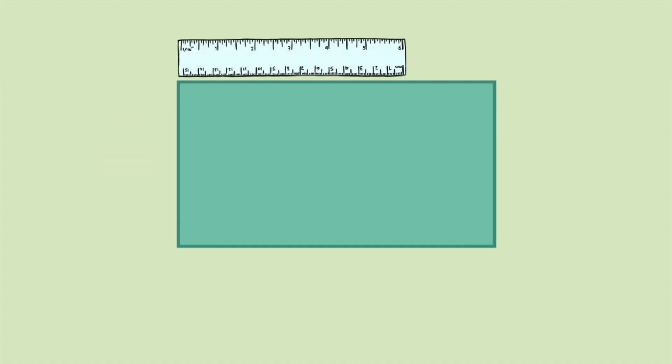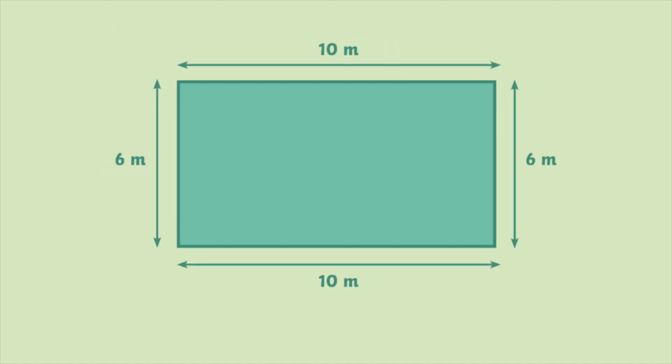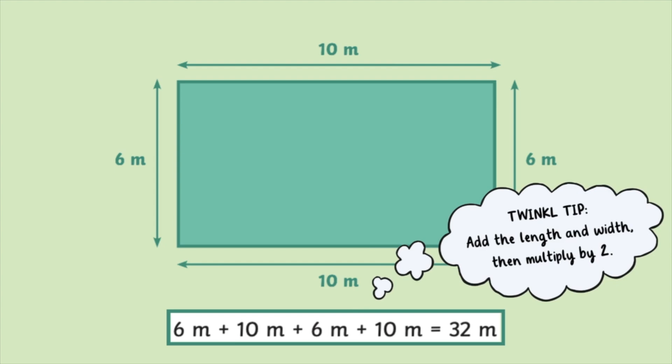For a rectangle, add the lengths of all four sides. An easy way is to add the length and width, then multiply by two.